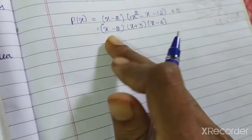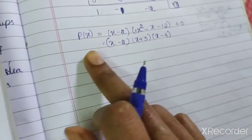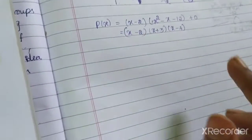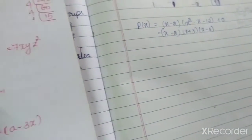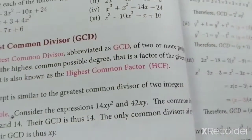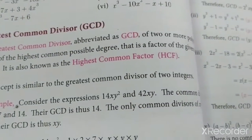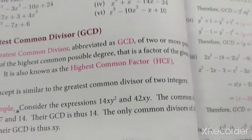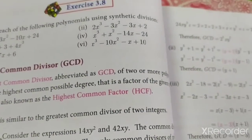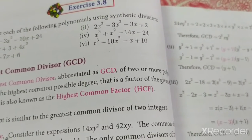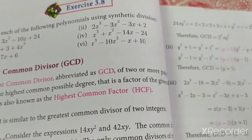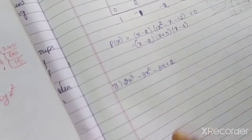So this is my answer. Then the second question is the same type. They give us: 2x cubed minus 3x squared minus 3x plus 2.